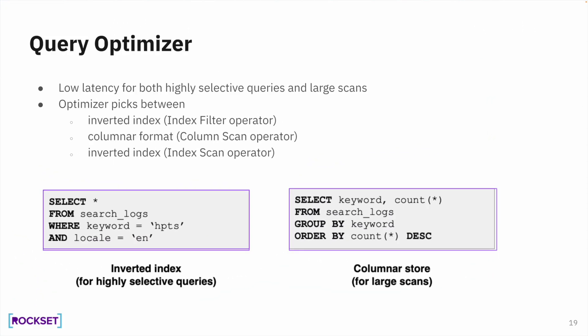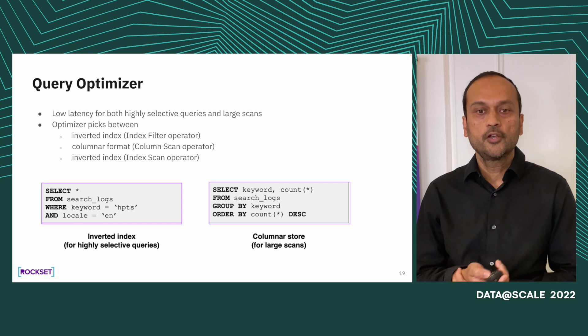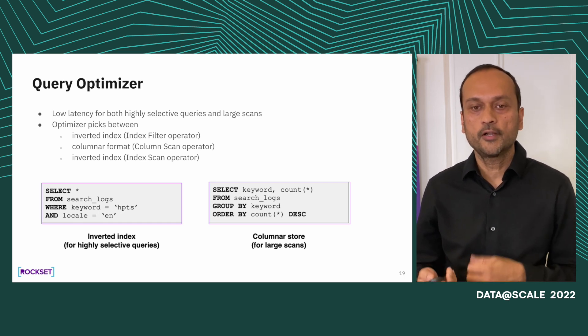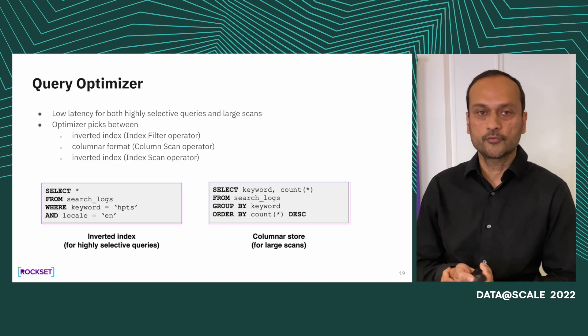All kinds of queries can be served fast using this converged index. Unlike traditional systems where you spend a lot of time retrieving data, here data retrieval is fast or optimal based on your query. For example, a query looking for keyword equal to HPTS and locale equal to EM — based on statistics, the system knows to use the inverted index because selectivity is high and only a few records show up. Whereas for group-by, order-by, and aggregate queries, it will automatically use the columnar index. This is a key takeaway for people building machine learning infra — knowing the difference between indexing and scanning.